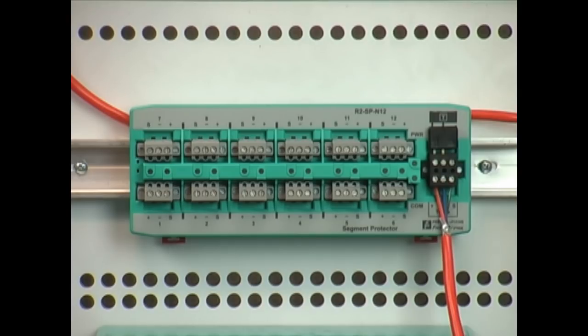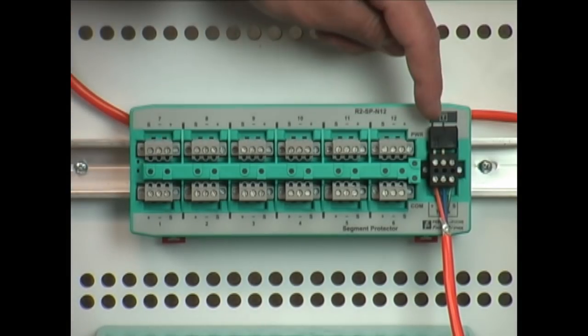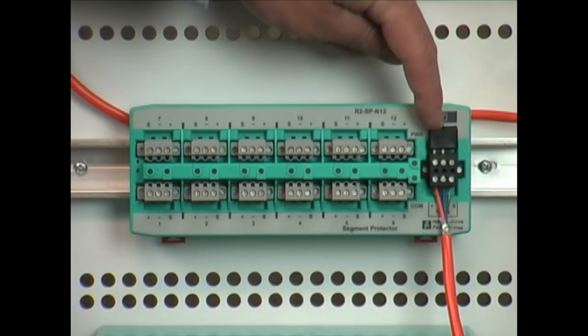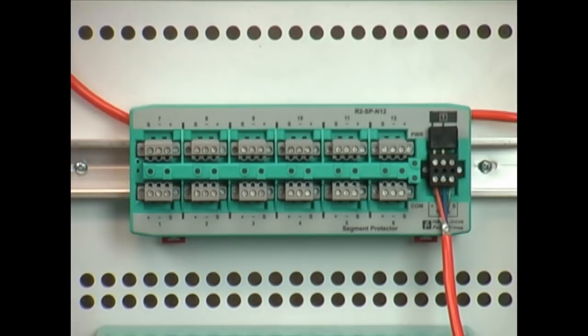Additionally built into the segment protector is the second terminator that you need for your Foundation Fieldbus segment. So again it's already included with the segment protector and makes it easier to ensure that you have two per segment.